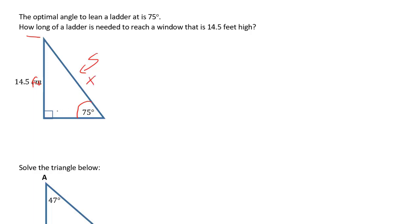So I'm going to represent the length of the ladder by x. First step when we're using trig ratios is to label our right angle triangle. So since this is the angle that we're focused on, this is going to be the opposite side, this is the adjacent, and the hypotenuse is right here.